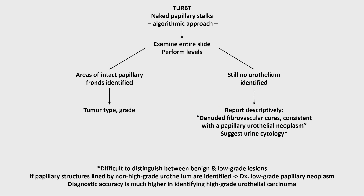What can you do once you've established you have naked papillary stalks? First, you have to examine the entire slide and all slides from the same patient. You could perform levels if you have sufficient material — all in an effort to identify areas of intact papillary fronts where, if present, you can establish tumor type, grade, and everything. But if even after performing levels and examining all the slides you still don't have any intact urothelium, you may want to report this descriptively. For example: denuded fibrovascular cores consistent with, or highly suspicious of, a papillary urothelial neoplasm.